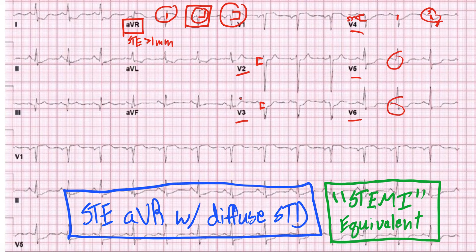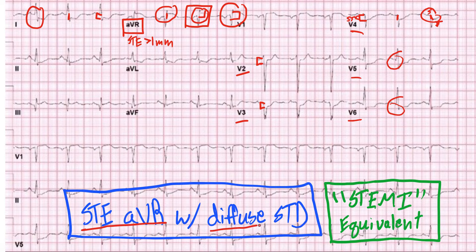Then you can even go over to your limb leads and again see ST depressions there — we're looking at the segment right there, right there, all that ST depression. So in this EKG, you have someone with ST elevations in AVR and diffuse ST depressions throughout.